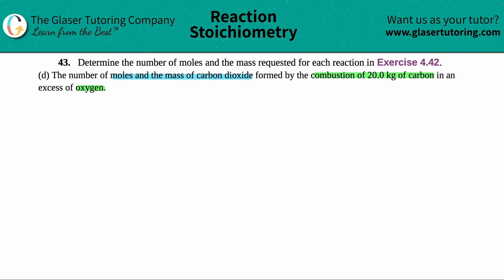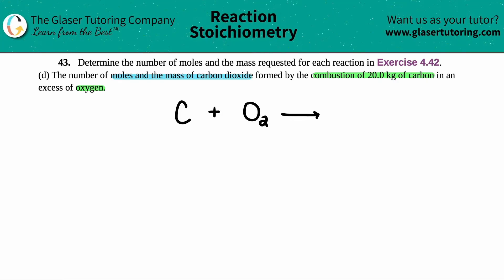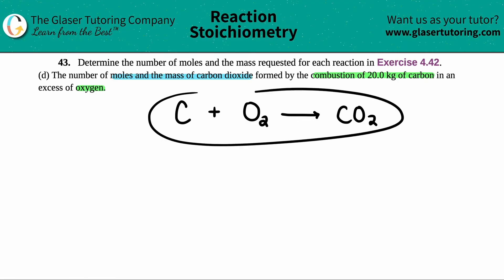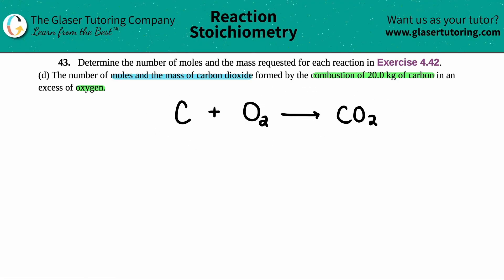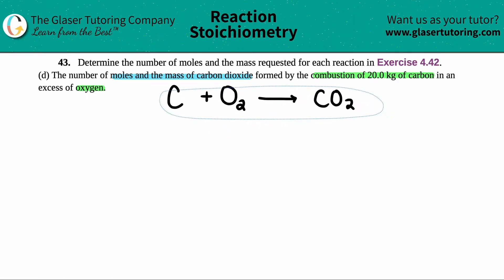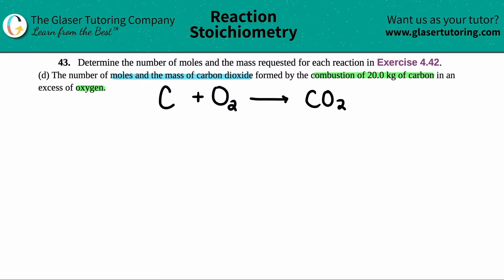In this case, we are combusting carbon in an excess of oxygen and forming carbon dioxide. The equation is C plus O₂ — remember, oxygen is one of your diatomics — and this yields CO₂. I write the equation, make sure it's balanced, and I can see that it is balanced. So we're all good to go.